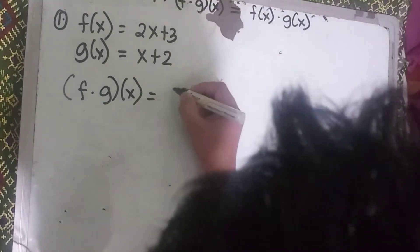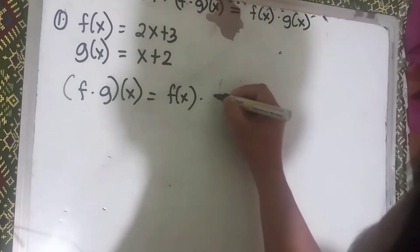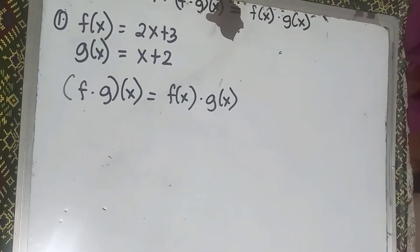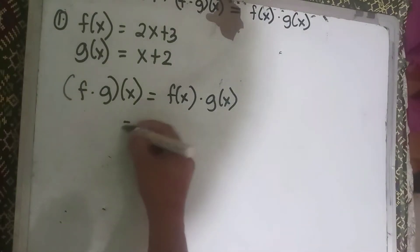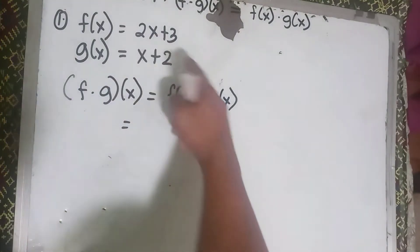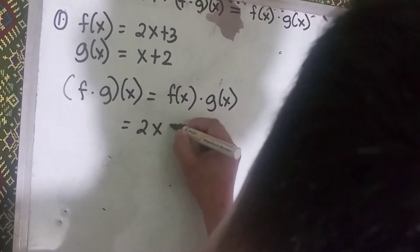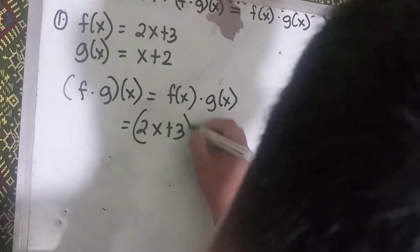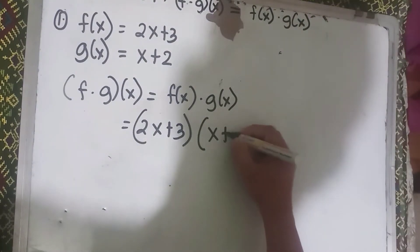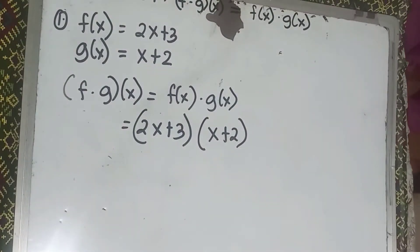The formula is: (f times g)(x) equals f of x times g of x. So we substitute — the value of f of x is 2x plus 3, times the value of g of x, which is x plus 2.